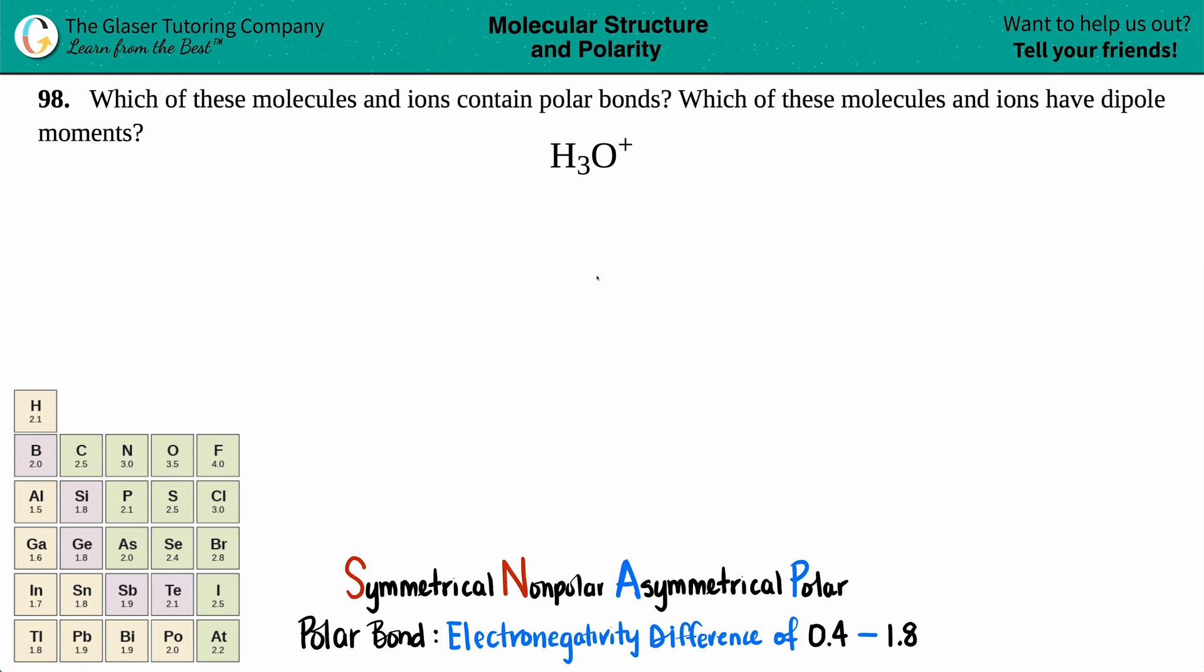Number 98. Which of these molecules and ions contain polar bonds and which of these molecules and ions have a dipole moment? And then we have H3O+.